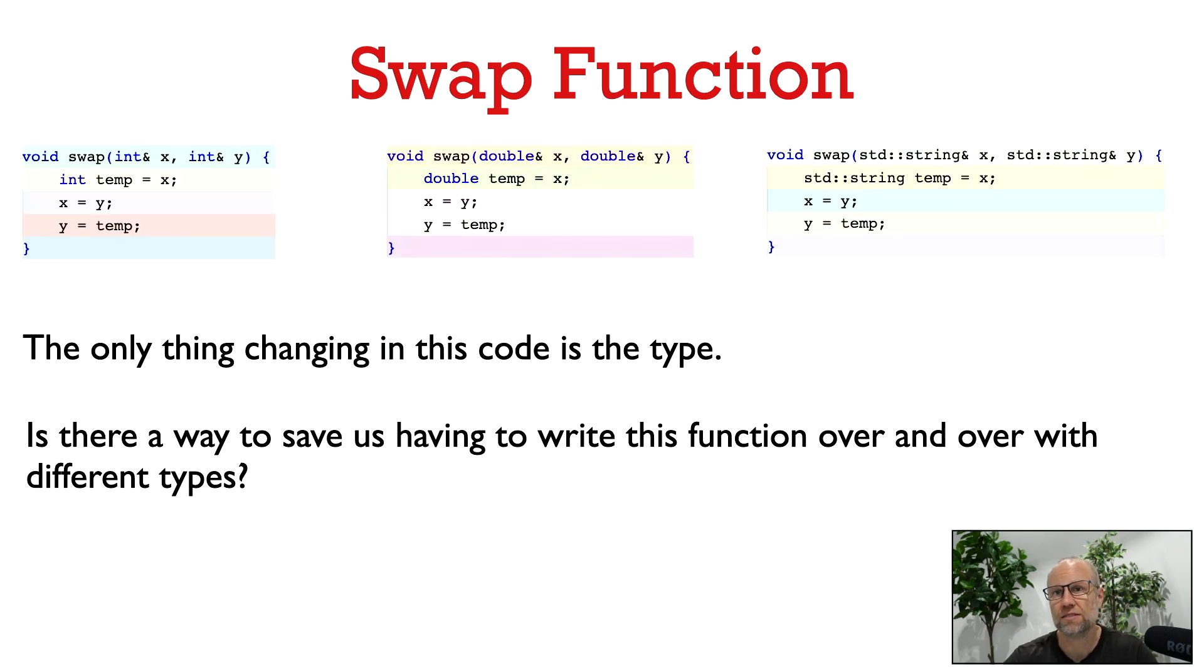So what can we do in this case? One thing is we could just write a swap function for every different type for which we'll need it. So here I've written the swap function for ints, for doubles, and for strings. But if you look at the code here, the code is exactly the same. The only thing that is changing is the type. So it seems kind of silly to have to write this function over and over when the only thing that's changing is the type. So is there some better way to do this? And the answer is yes. And that better way is via templates.